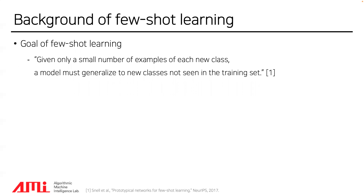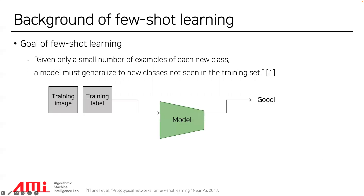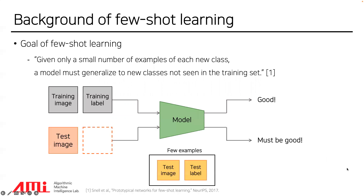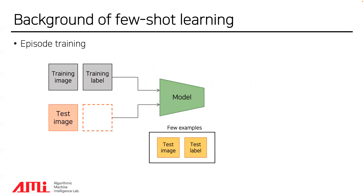What is few-shot learning? Given only a number of examples for each new class, a model must generalize to new classes not seen in the training set. We want the model to achieve good performance on training datasets and also on unseen test datasets. To further understand few-shot learning, we need to know about its experimental scenario. We can fully access the training dataset, including images and labels. However, at test time, we have only a small number of examples with unseen labels.